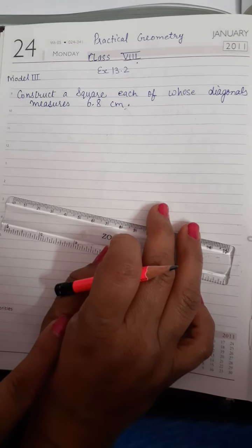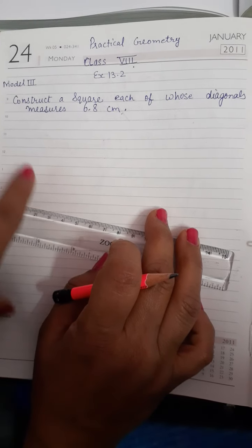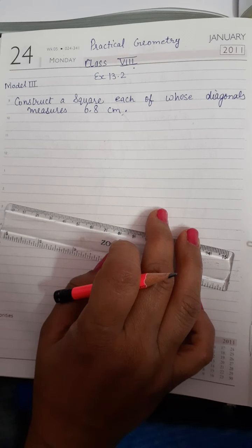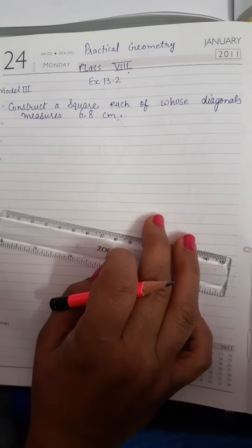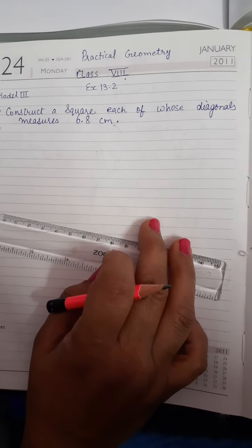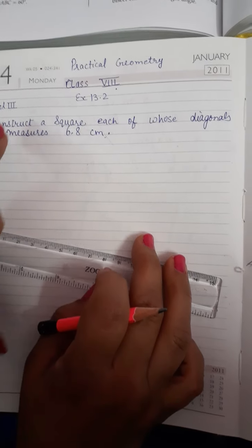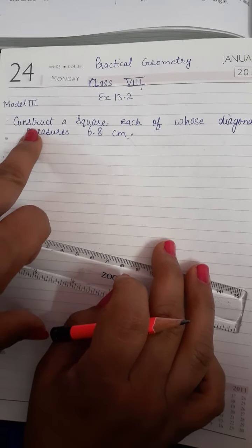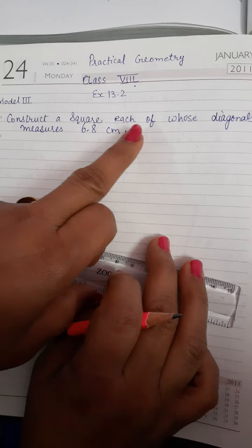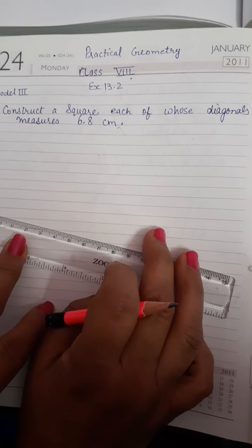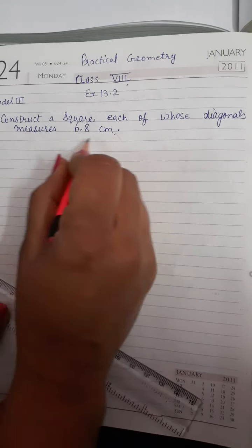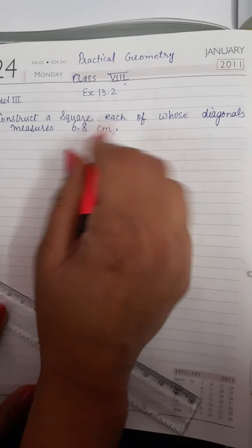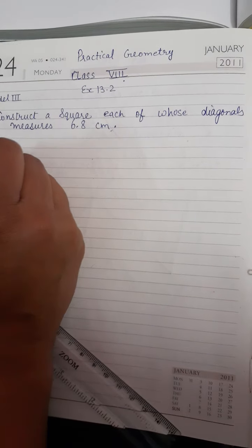Good morning students, today I am going to explain you the next question from model three, exercise 13.2. How to construct a square with two diagonals? Let's see the question: construct a square each of whose diagonals measures 6.8 centimeter.